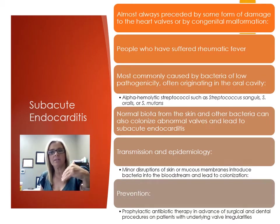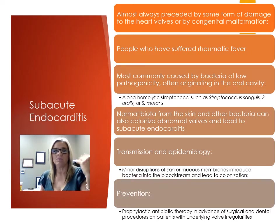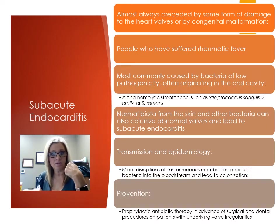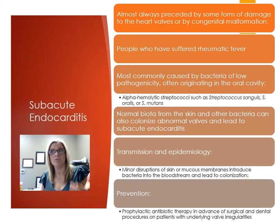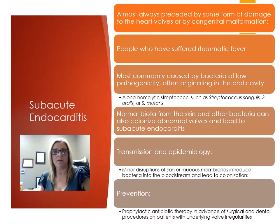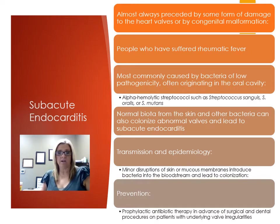A small cut in the skin or mucous membranes allows bacteria to enter the bloodstream, leading to colonization. Things like rigorous tooth brushing, dental procedures, and minor cuts or lacerations can introduce bacteria. The bacteria are generally not transmitted from other people — it's what's already present as an opportunistic infection. Prevention includes giving antibiotics prophylactically before surgical or dental procedures in patients with underlying heart irregularities. That's why health questionnaires in these settings are very important.